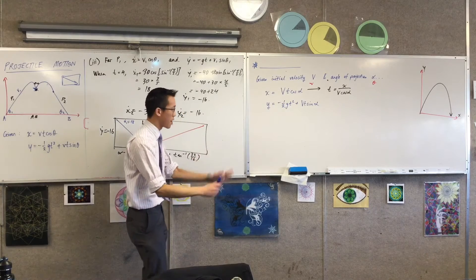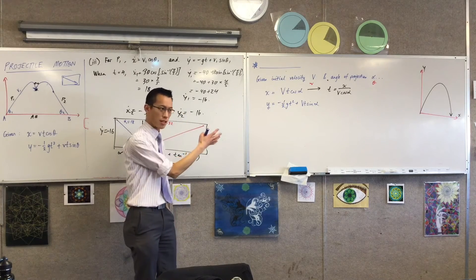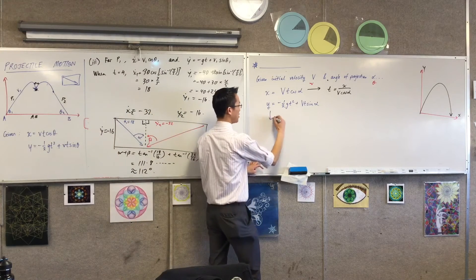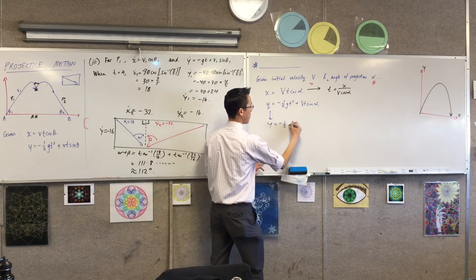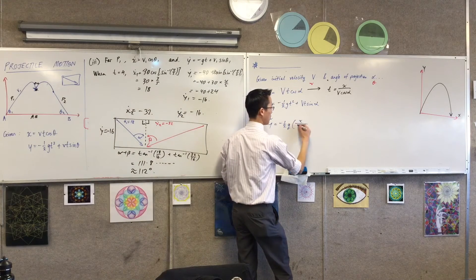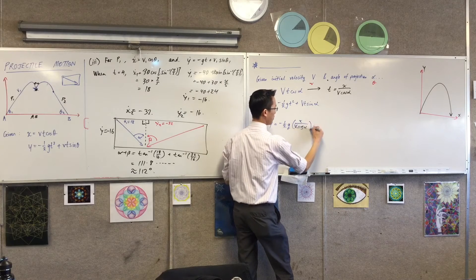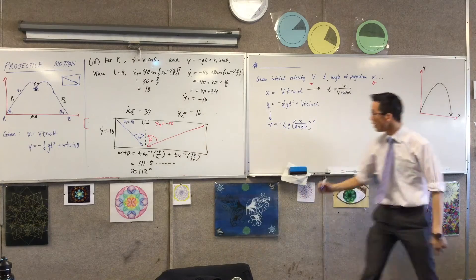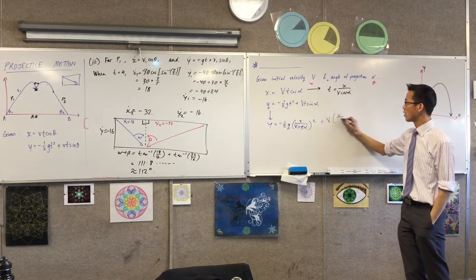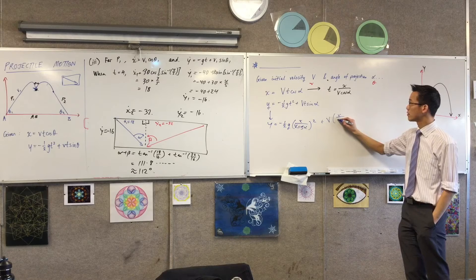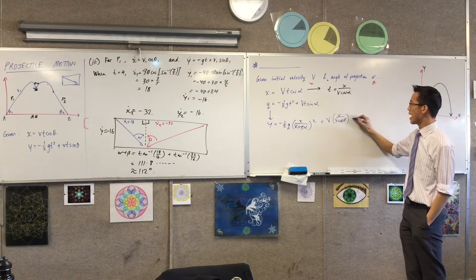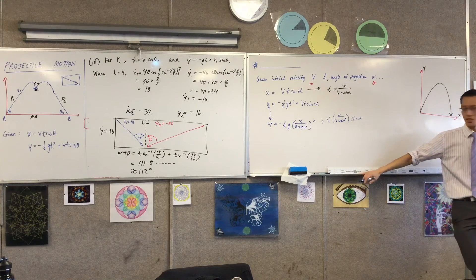Now this is a result not to be memorized, but we want to notice some interesting things about it and see how it can be applied. So firstly, let's just do the substitution. This is going to be y equals minus 1 half g, there's t. So this is going to be x on v cos alpha squared. Let's just finish this up. Take away v, here's my thing again, x on v cos alpha. And then I've got a sine alpha that was already hanging there from the initial question.